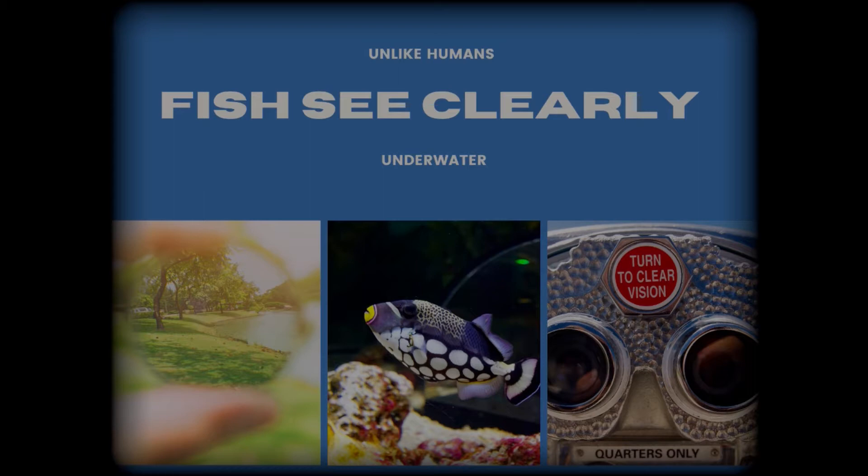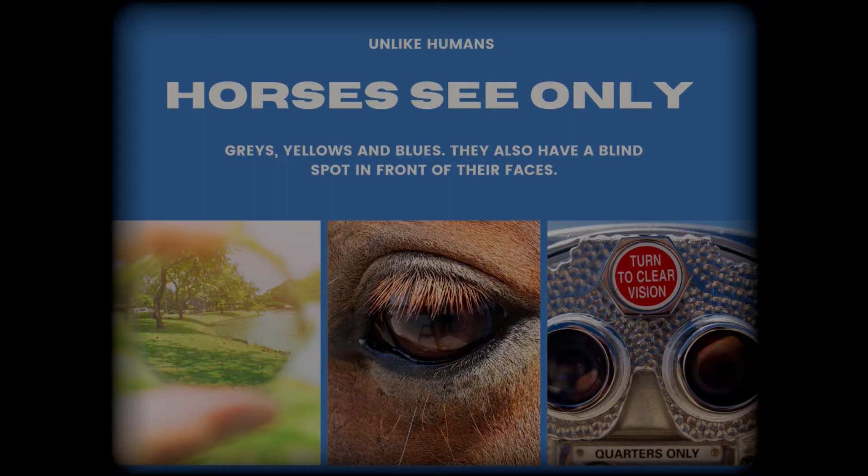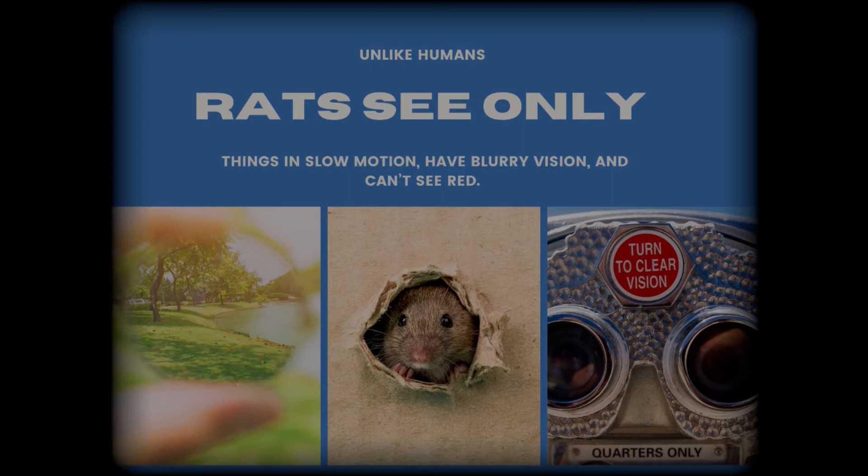However, sharks can't see any color but they see much clearer than humans. Horses see only grays, yellows, and blues. They have a blind spot right in front of their faces.